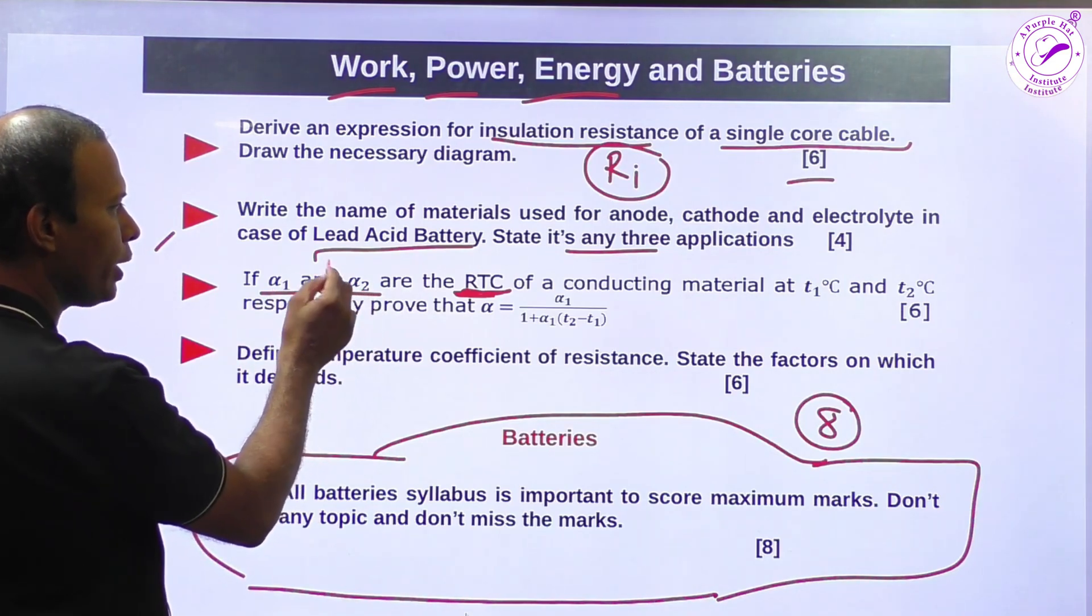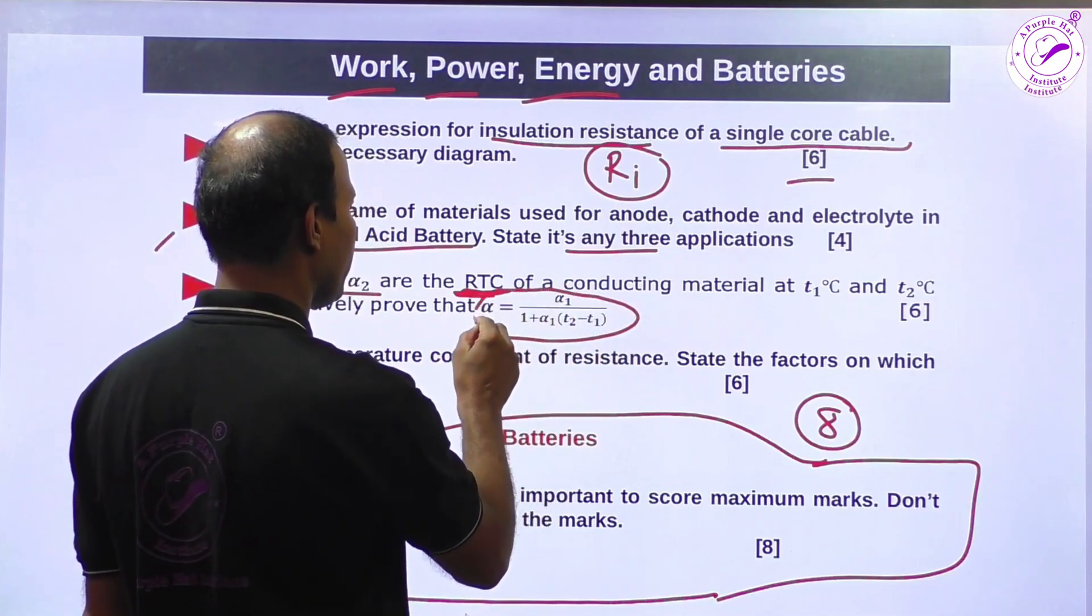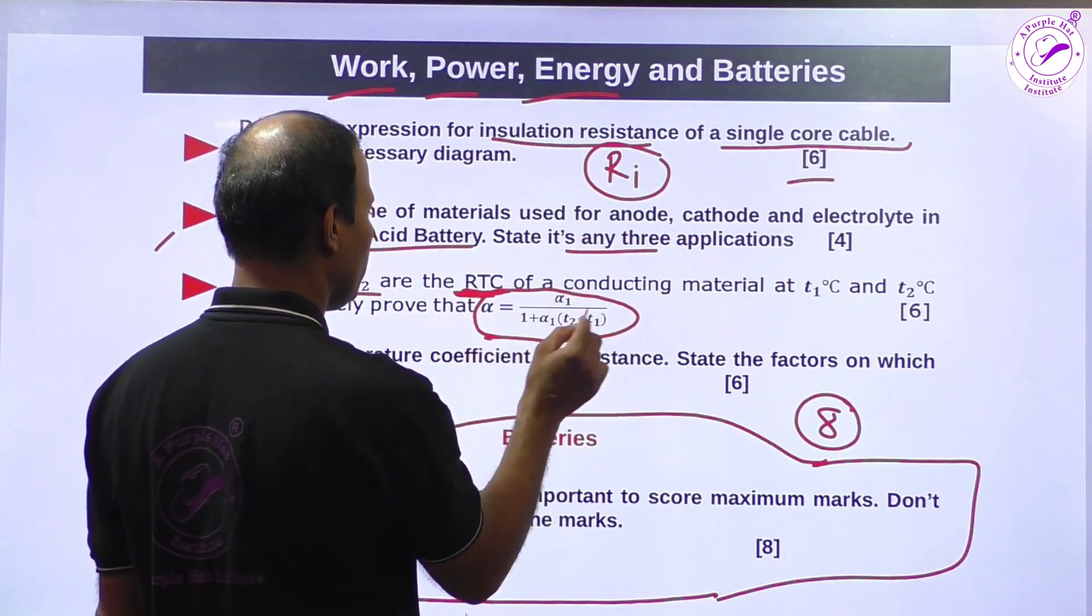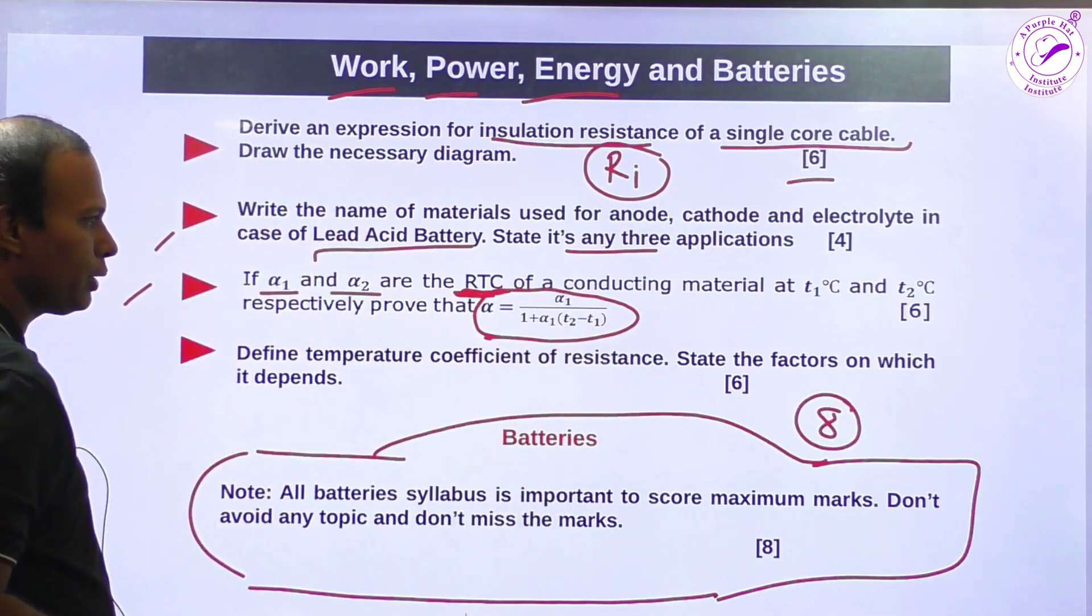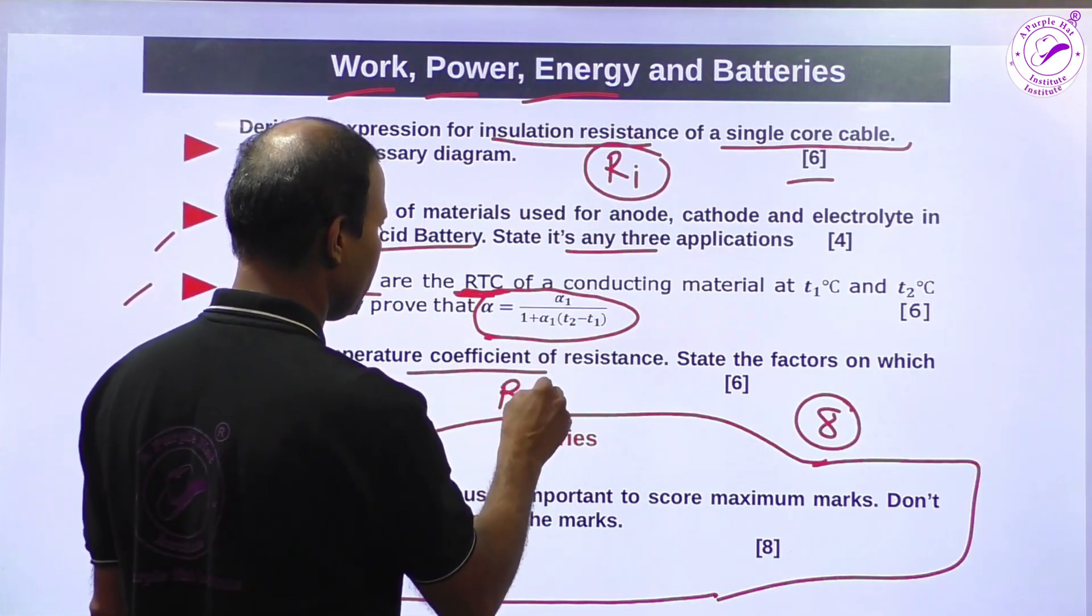Alpha one, RTC at t1 degrees Celsius, RTC alpha two at t2 degrees Celsius, and then you have to derive this expression. This is again important, so this expression is also important. I am suggesting for this exam: define temperature coefficient of resistance, RTC, define RTC.